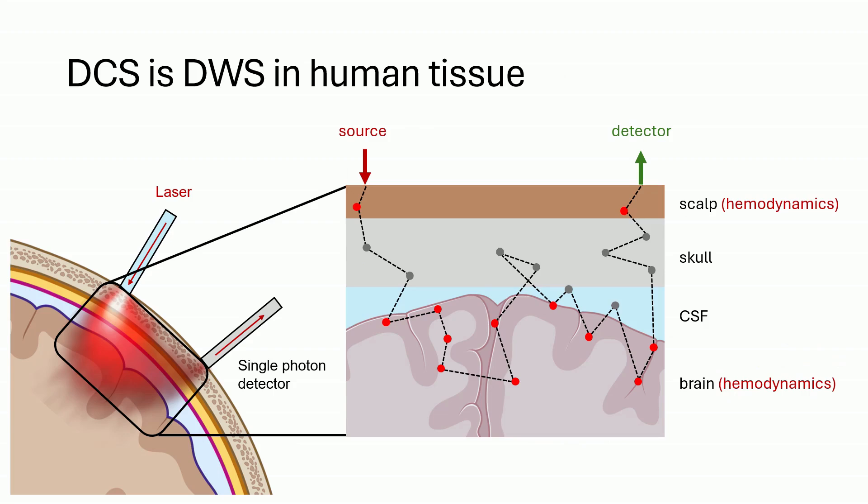Now, DCS is simply the same concept with the light backscattered through human tissue. Here I show a single photon path, and we can see it scatters randomly throughout the tissue before being detected.